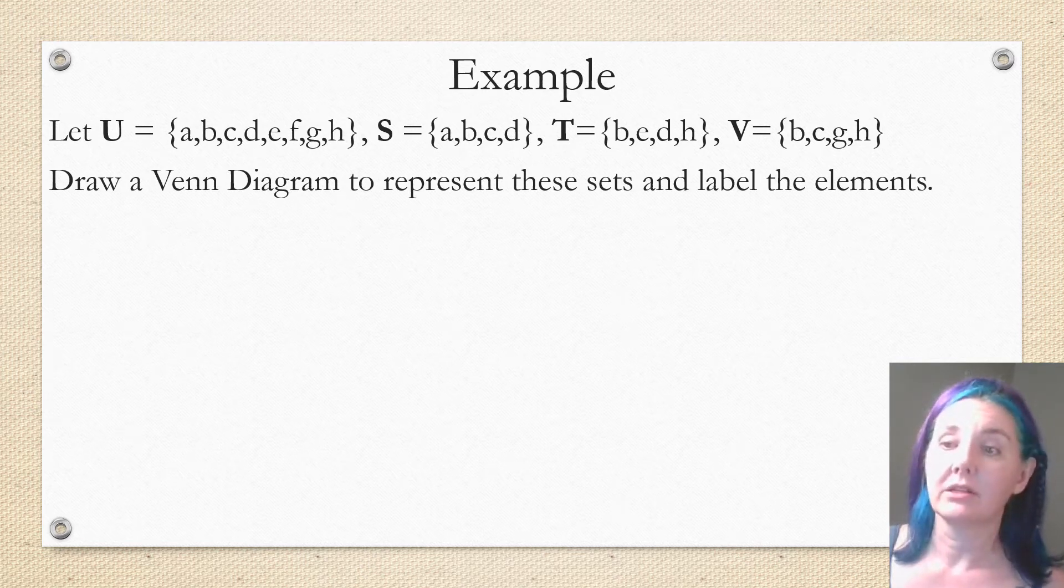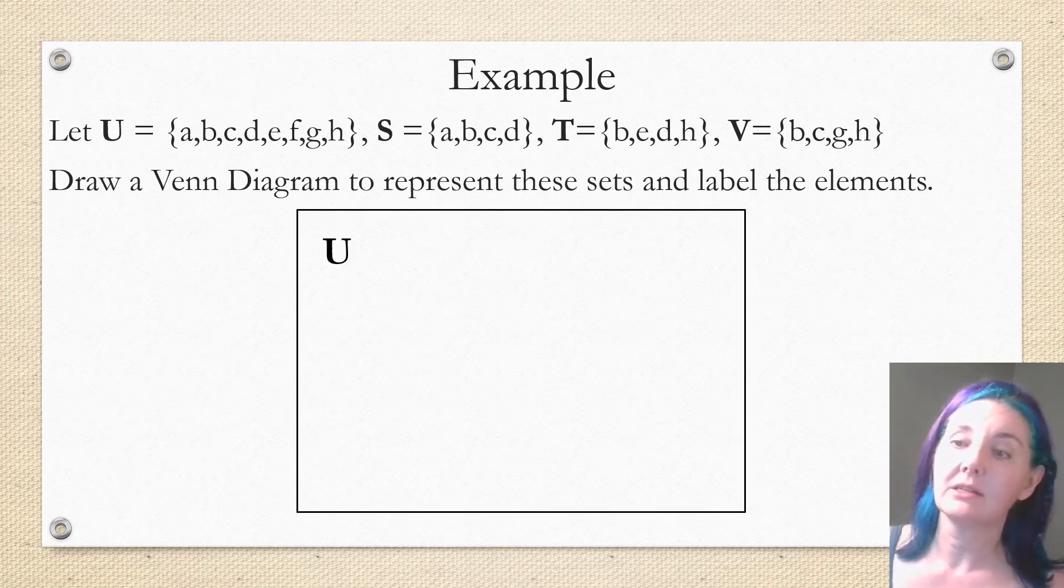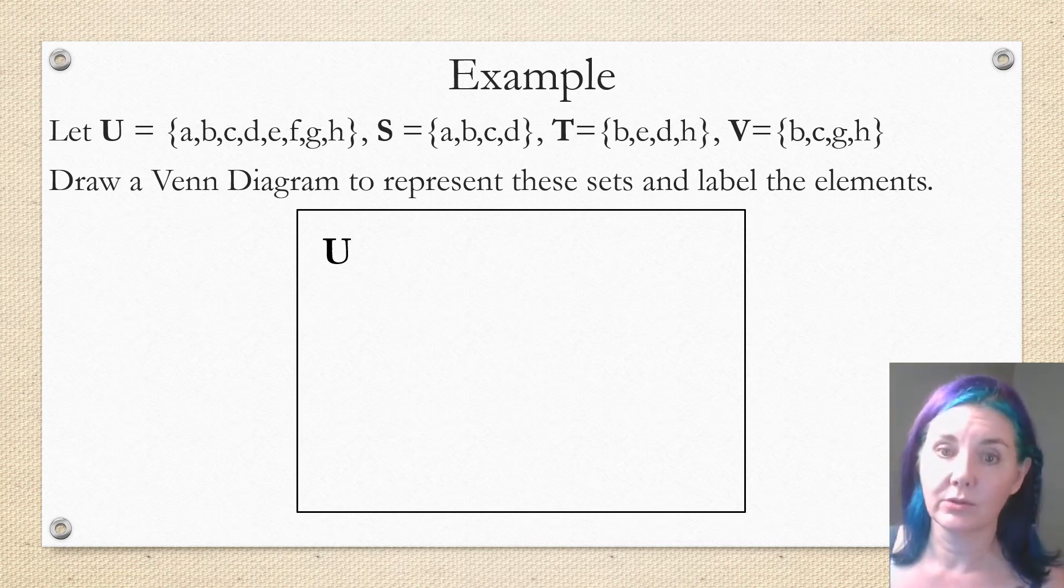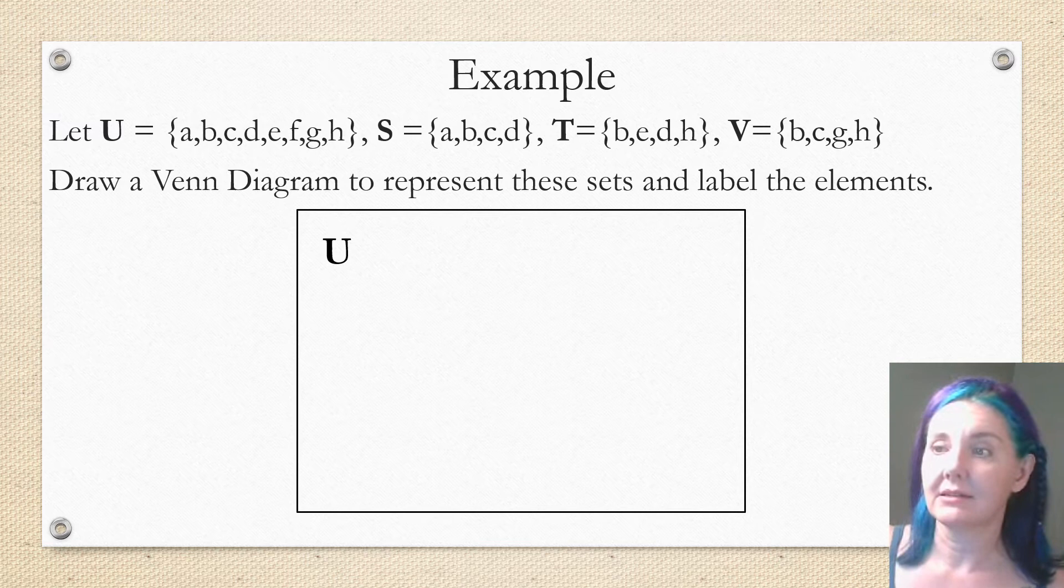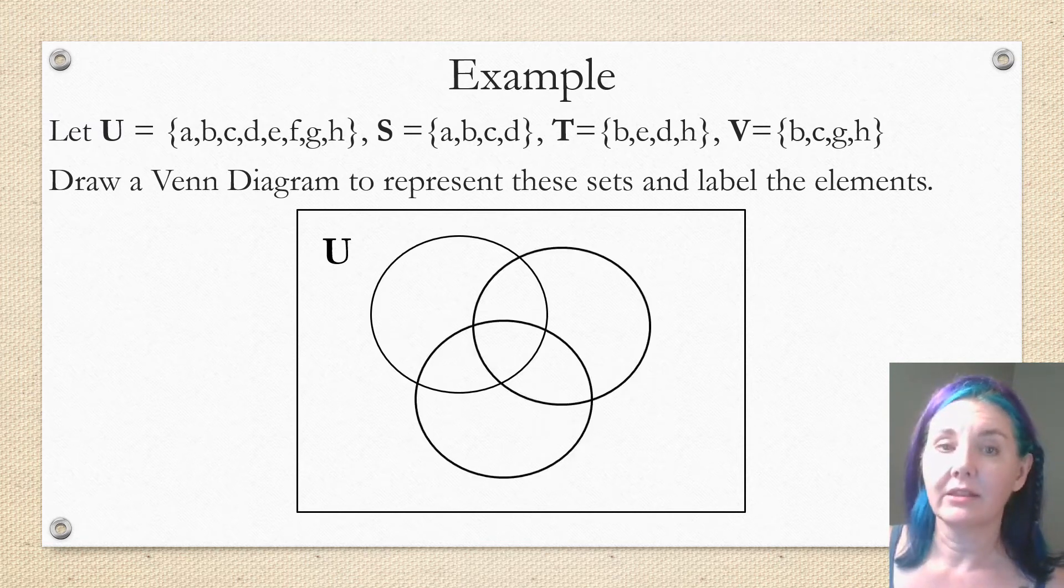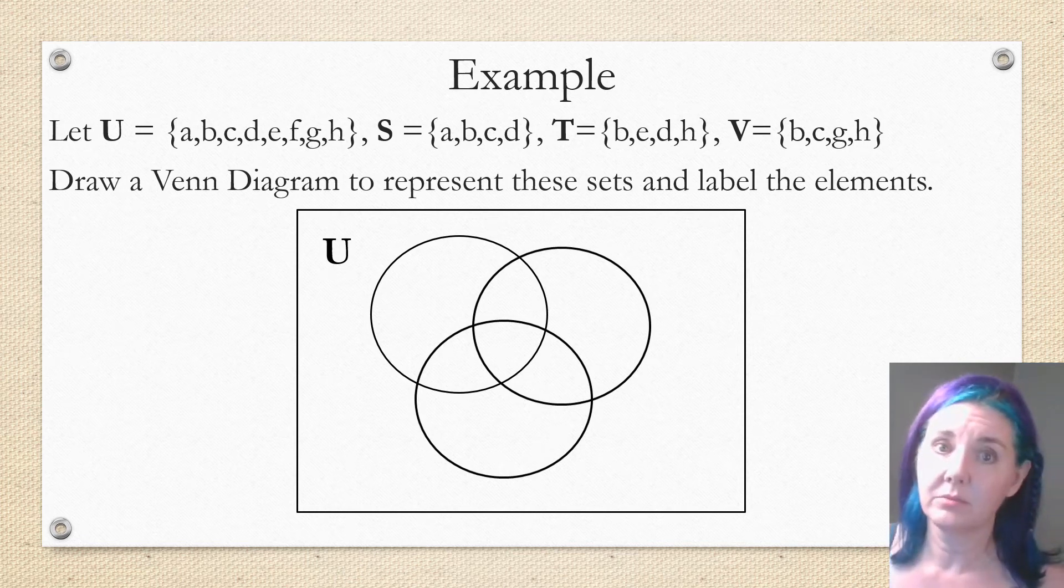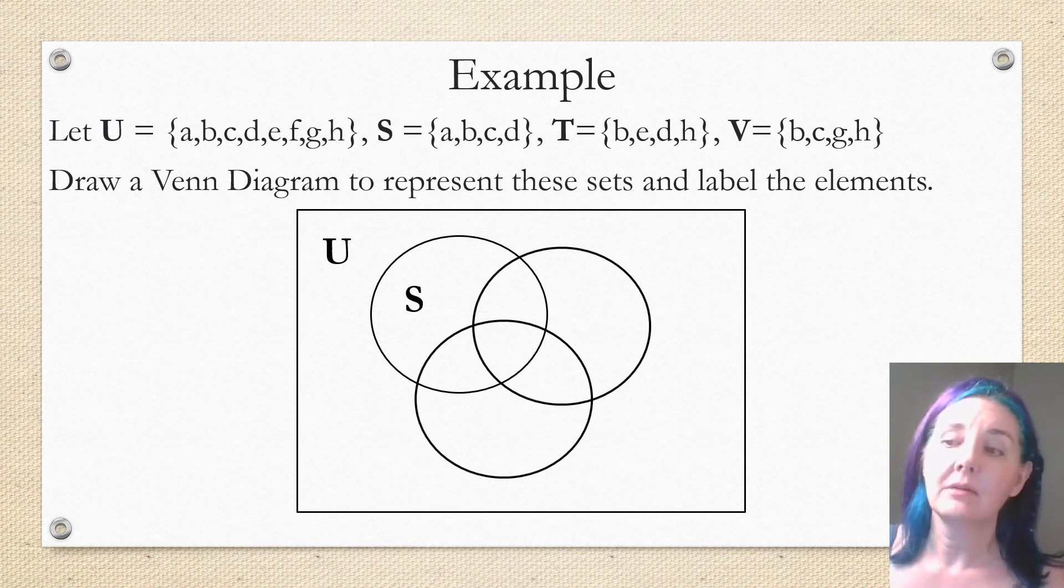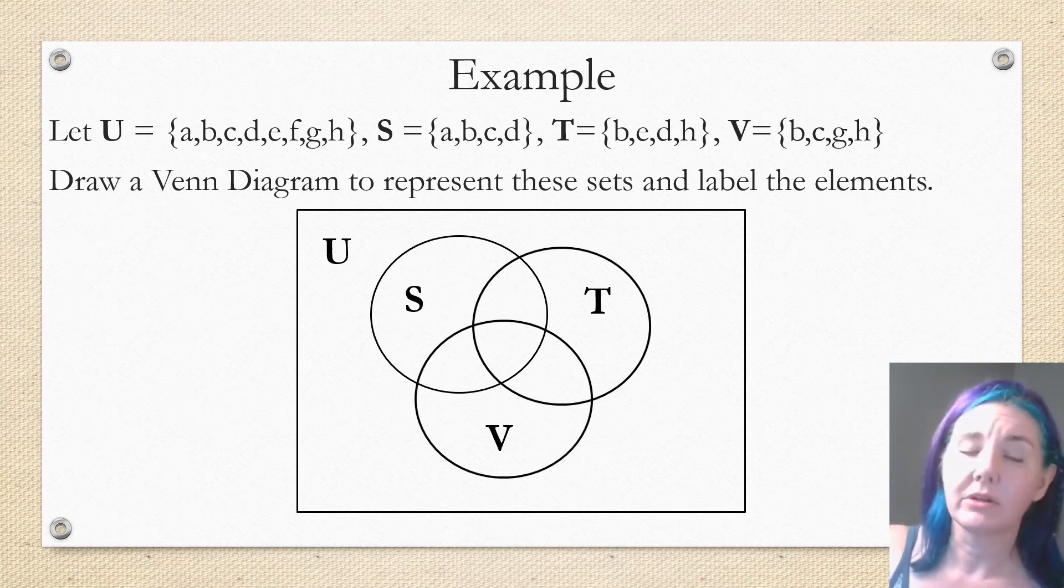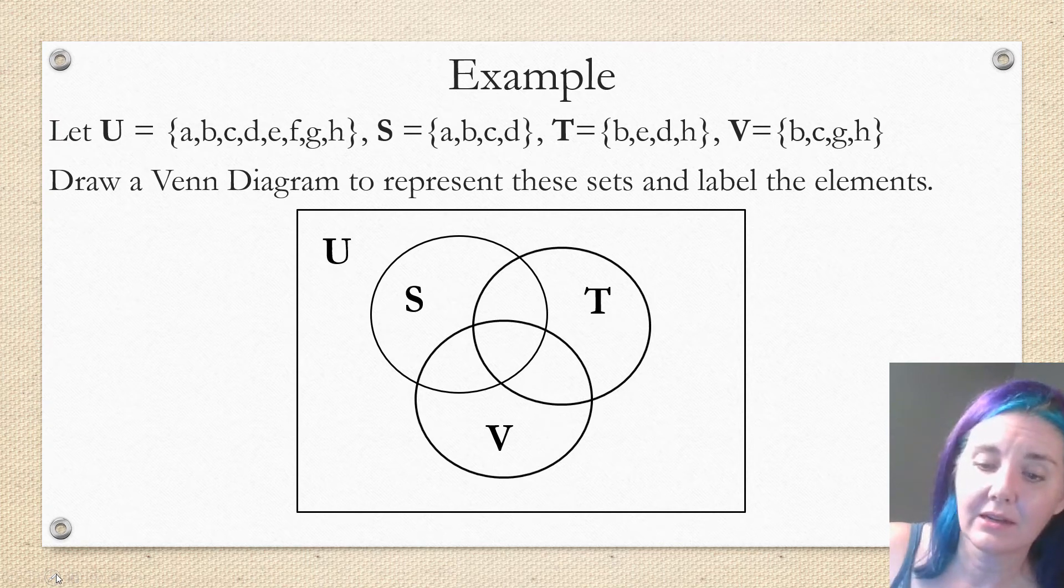We're going to draw our Venn diagram placing a rectangle and labeling it as U. And then we need three circles to represent the three sets S, T, and V. They have to overlap each other and there even has to be a place where all three overlap because it's possible there's an element that is actually in all three of the sets. You can label them any way you want. In other words, you could have had a T in the upper left instead of an S. It wouldn't be wrong to rearrange them.